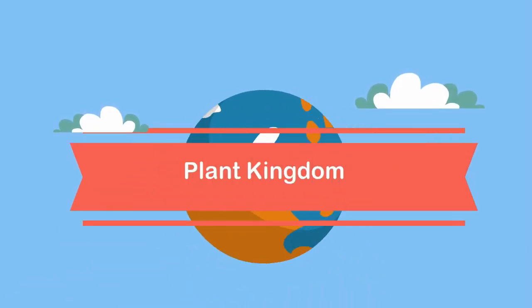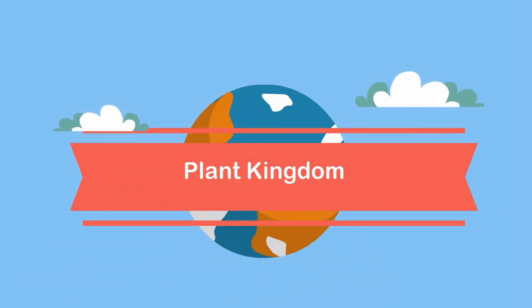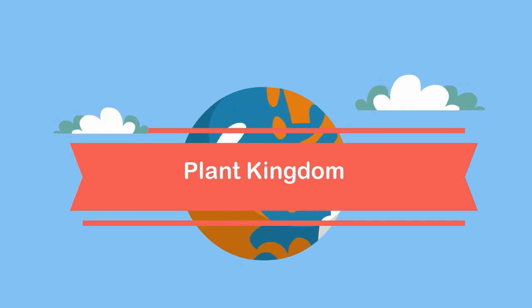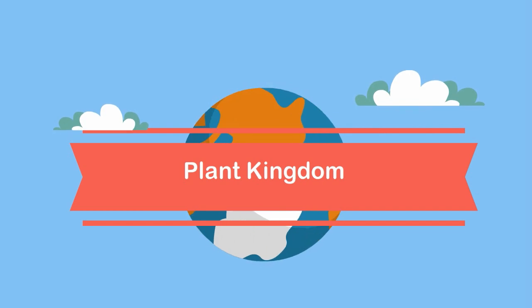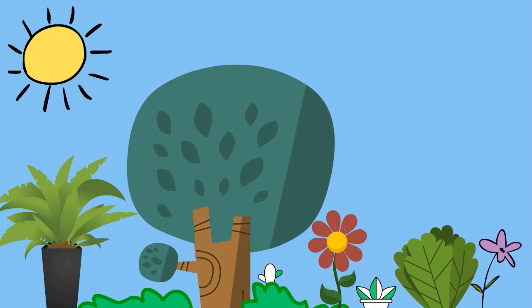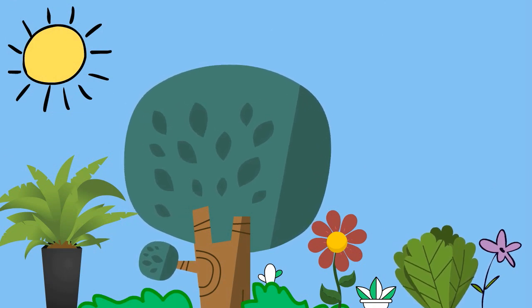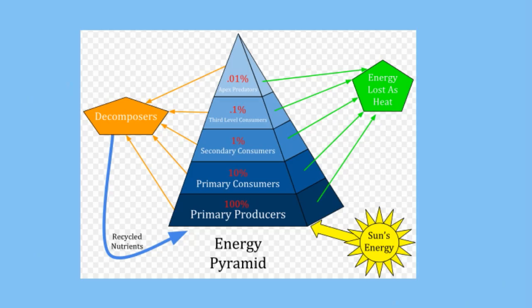Welcome to MooMooMath and Science. In this video I would like to talk about the plant kingdom. The plant kingdom is made up of multicellular eukaryotic organisms that get their energy from the sun. They are producers and they make up the bottom part of energy pyramids.